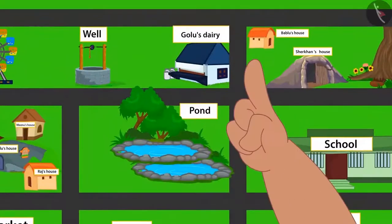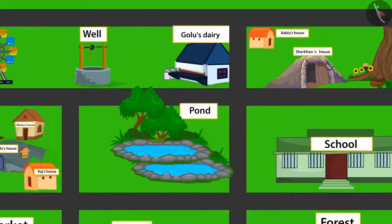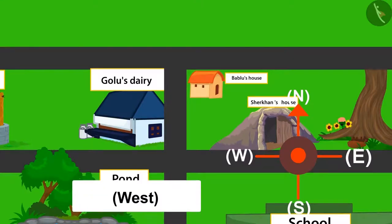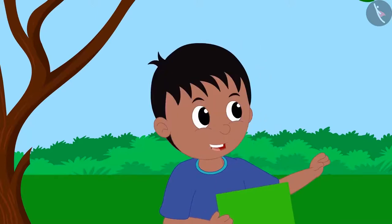So this is my house and this is Golu's Dairy. If the direction towards the front of my home is north, then to the left would be west direction. Golu's Dairy is towards the west from my home. So to go there, I will go towards west. Very nice Bablu. This is absolutely correct.